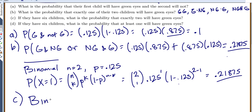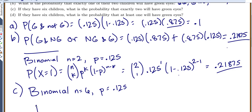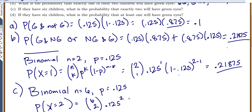For part C, this is binomial with n equals 6 and p equals 0.125, and we want the probability that x equals 2. We calculate 6 choose 2 times 0.125 to the power of 2 times 0.875 to the power of 4, which gives approximately 0.137.